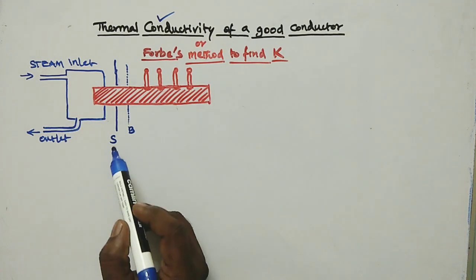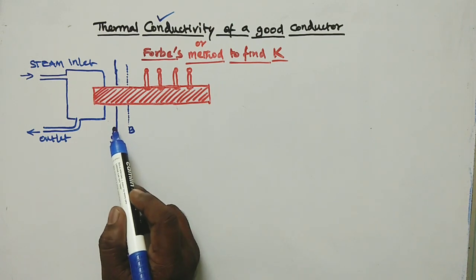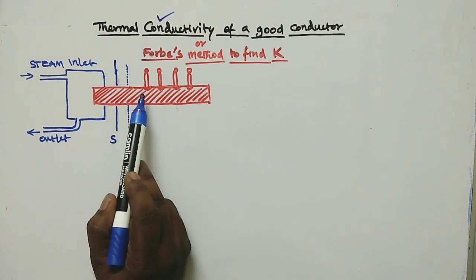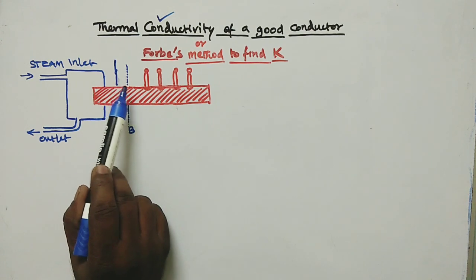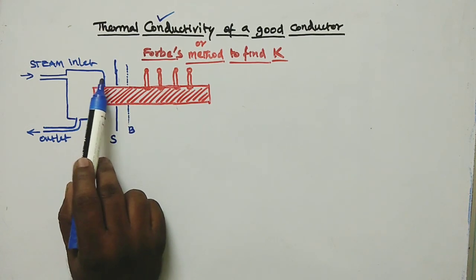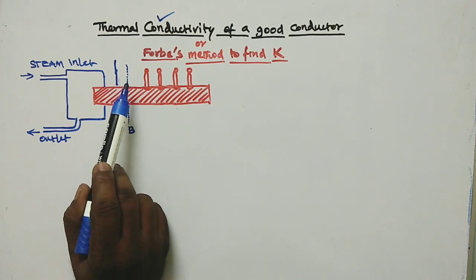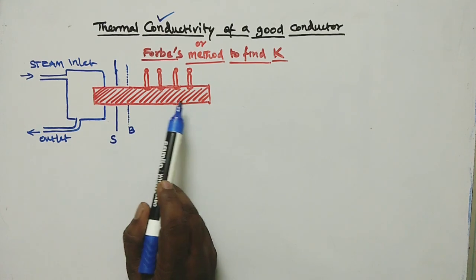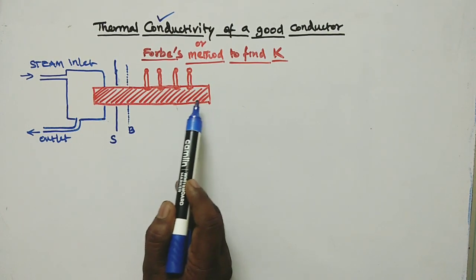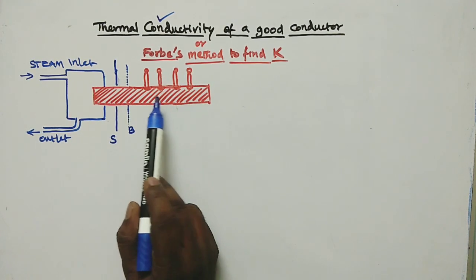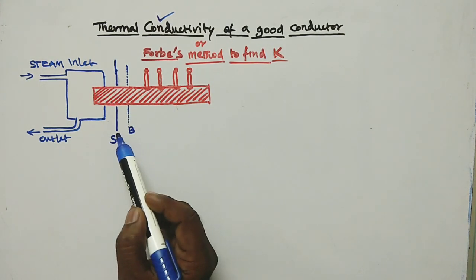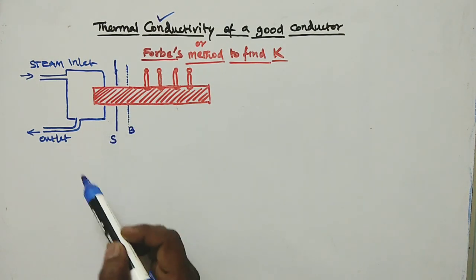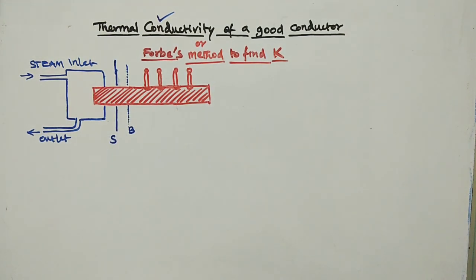If we remove the cardboard, the rod receives excess temperature from the steam container by radiation, and this rod's temperature increases randomly. We cannot do this experiment properly. So we must place this cardboard — that is very important.